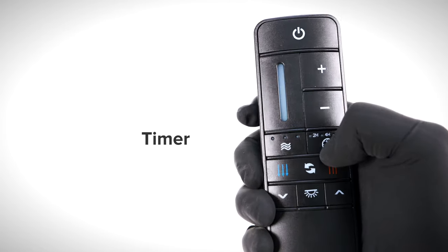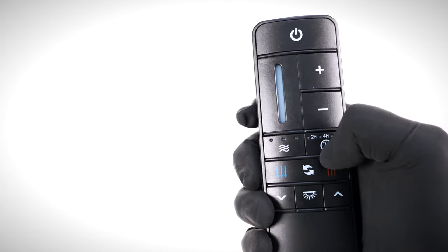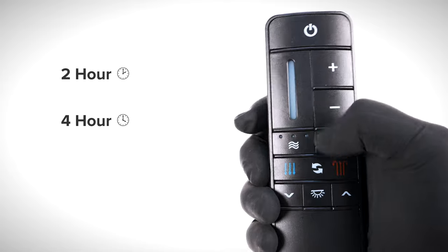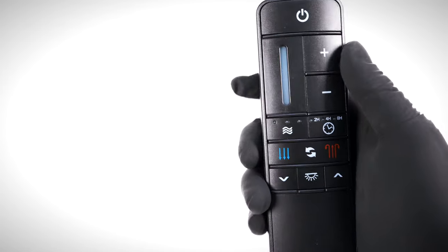The timer function turns the fan and light off after a certain amount of time has passed. The delay can be set to 2 hours, 4 hours, or 8 hours. Pressing the button a fourth time will deactivate the timer function.